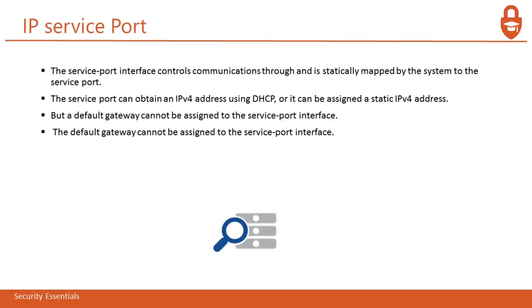Next is IP service port. The service port interface controls communicate through and is statistically mapped by the system to the service port. The service port can obtain IPv4 addresses using DHCP, or it can be assigned a static IPv4 address. A default gateway cannot be assigned to the service port interface. We use multiple ports in our system, and this is the port for IP service.